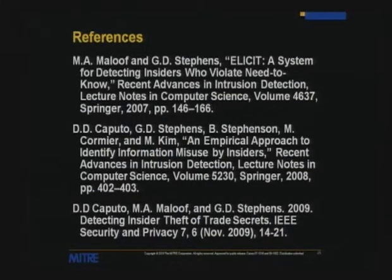We have a number of papers that go into the research — both the initial internal ILLICIT work and the work done under the Institute for Information Infrastructure Protection. A summary of all this work is in the November edition of IEEE Security and Privacy Magazine.